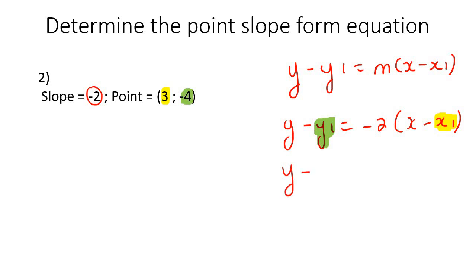So it says y take away, and then this is negative, so I'm just going to say negative 4. I've got two negatives there, which we'll have to fix up a little bit later. And then negative 2 times x take away 3. So then that will just become y add 4 equals negative 2 times x take away 3. And that's it.